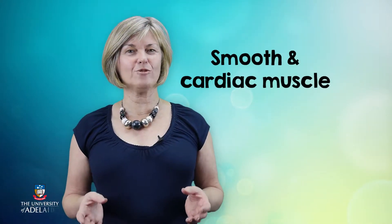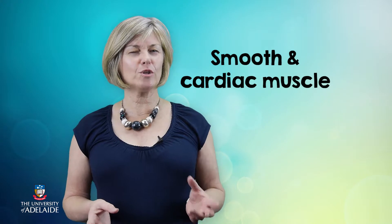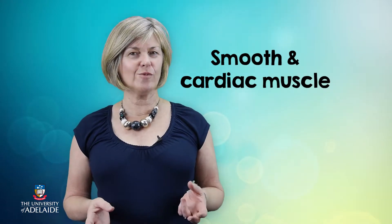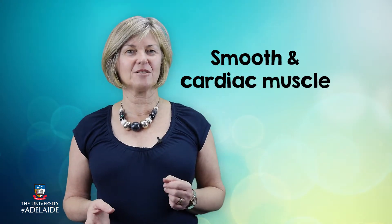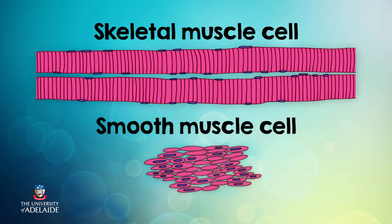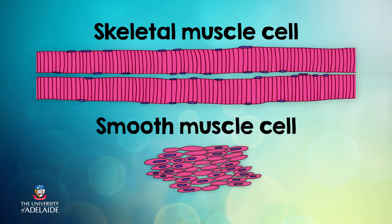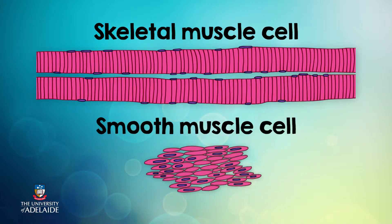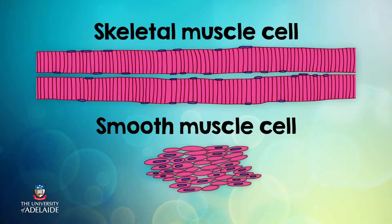Now that we know more about skeletal muscle, let's take a closer look at the other two types: smooth muscle and cardiac muscle. Remember how skeletal muscle cells, like the one on the top of this image, are elongated and are often called muscle fibres? Well it's the same for smooth muscle cells, although they are nowhere near as long and they tend to be more tapered on the ends. Despite this, they are often called smooth muscle fibres as well.